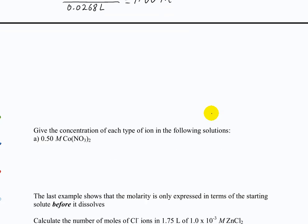Let's do another one, a little bit different. The question says: give the concentration of each type of ion. If we're asking for a concentration, we're looking for units of molarity — the big M we've been talking about. There are other measures of concentration too, like mass percent, but primarily when we talk about concentration we're talking about molarity or molar.